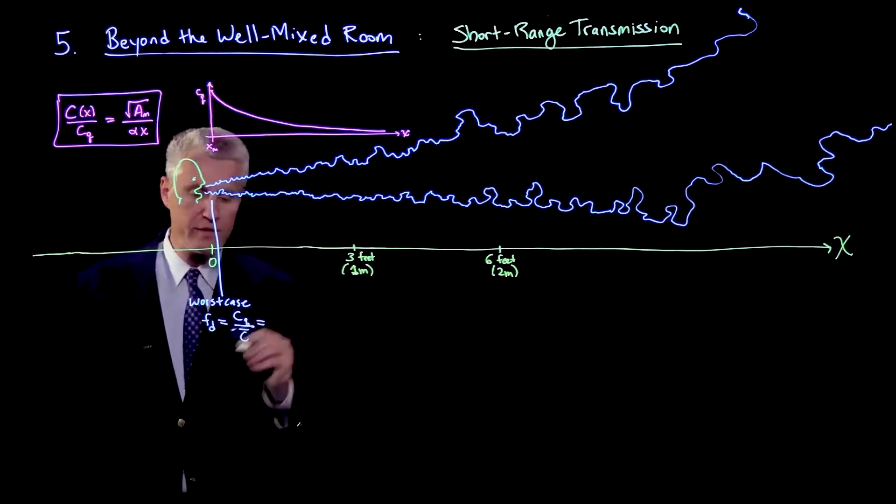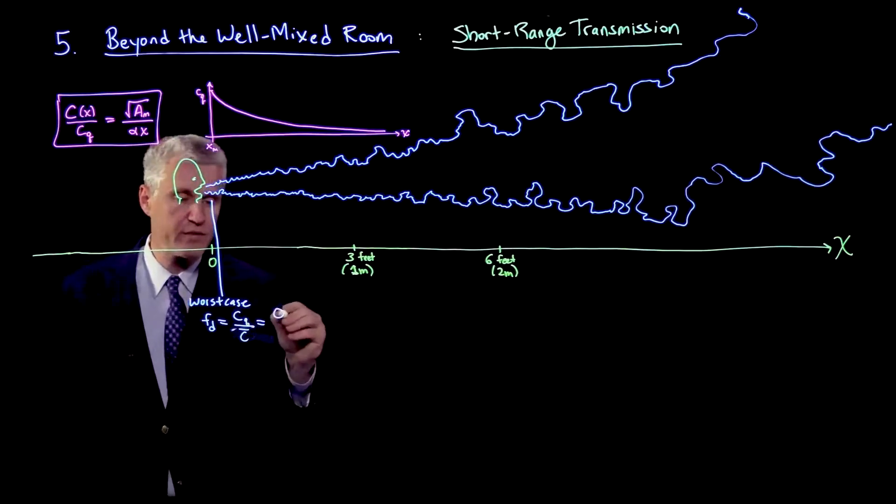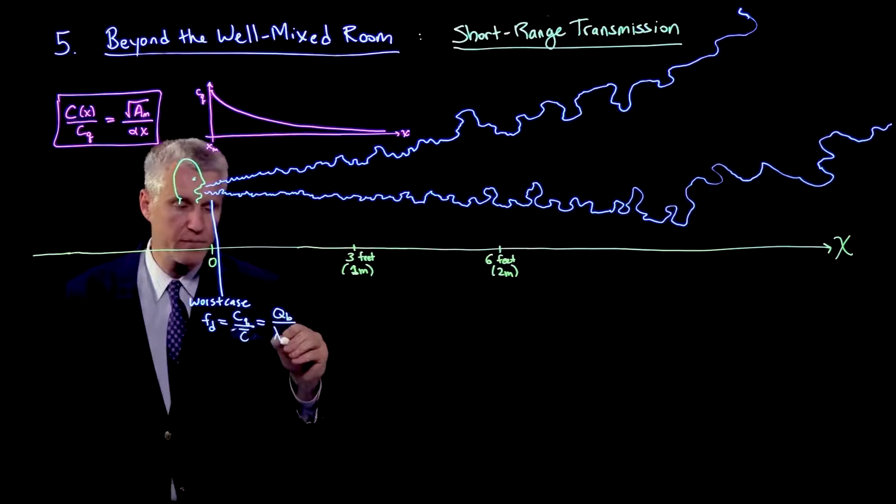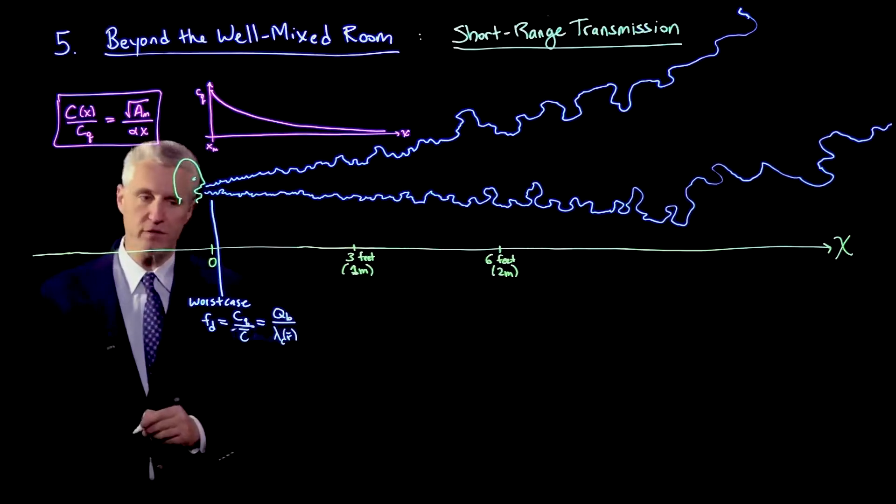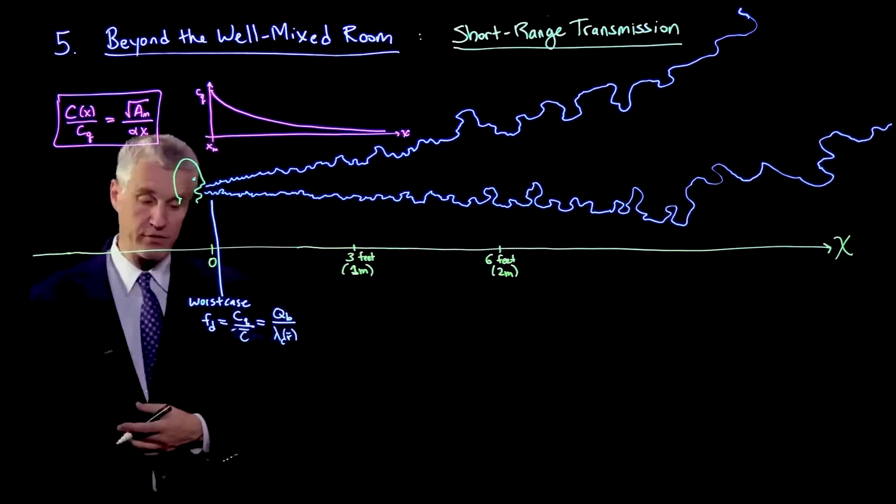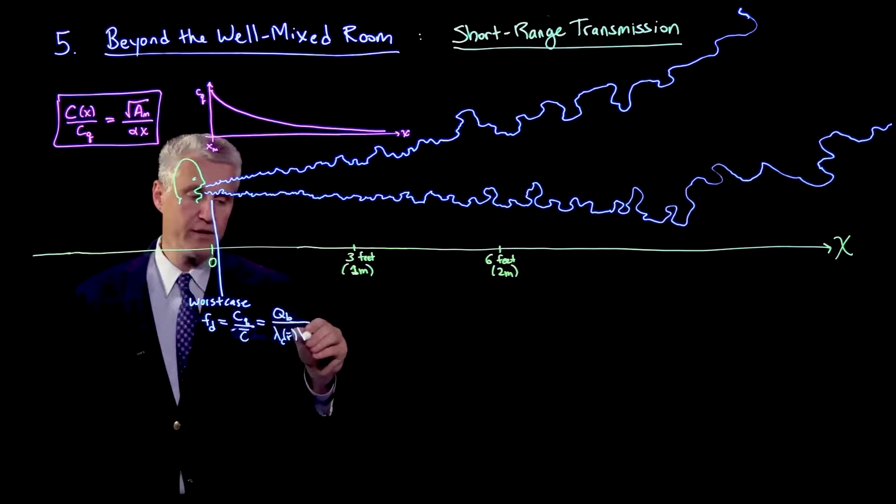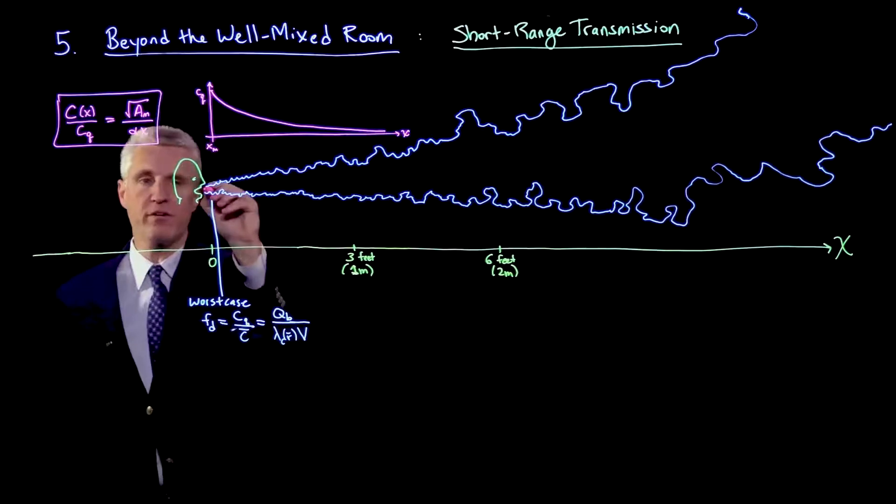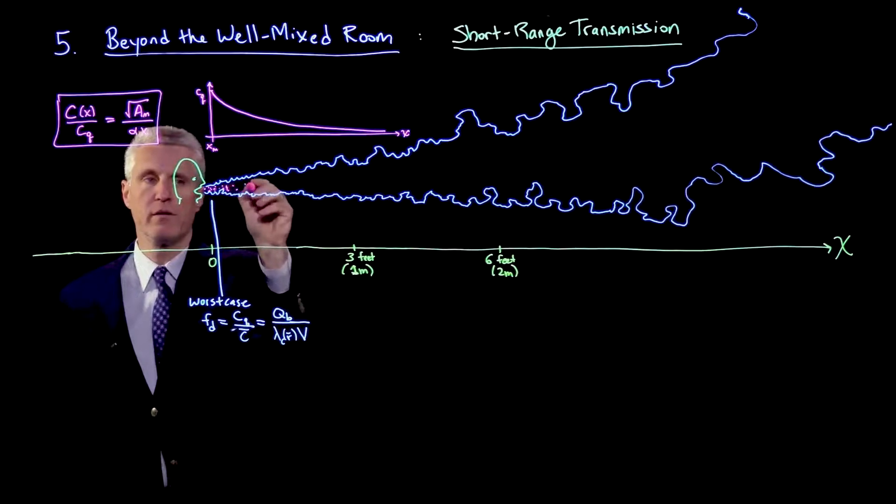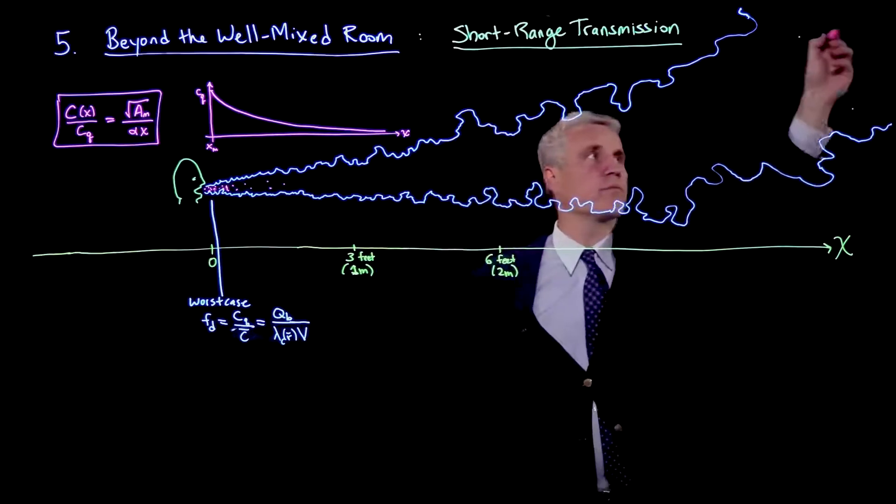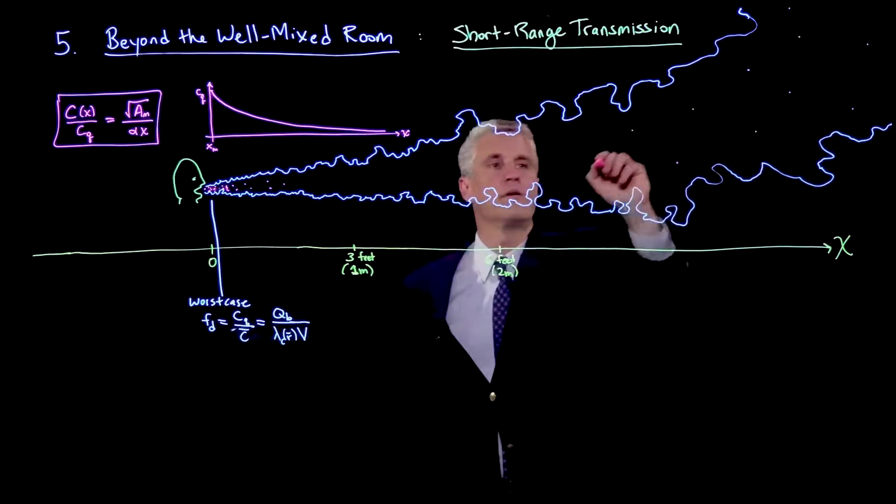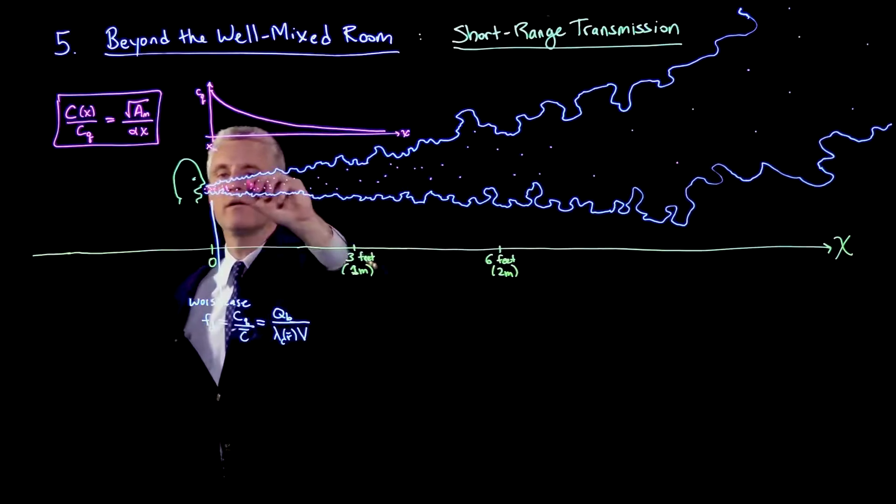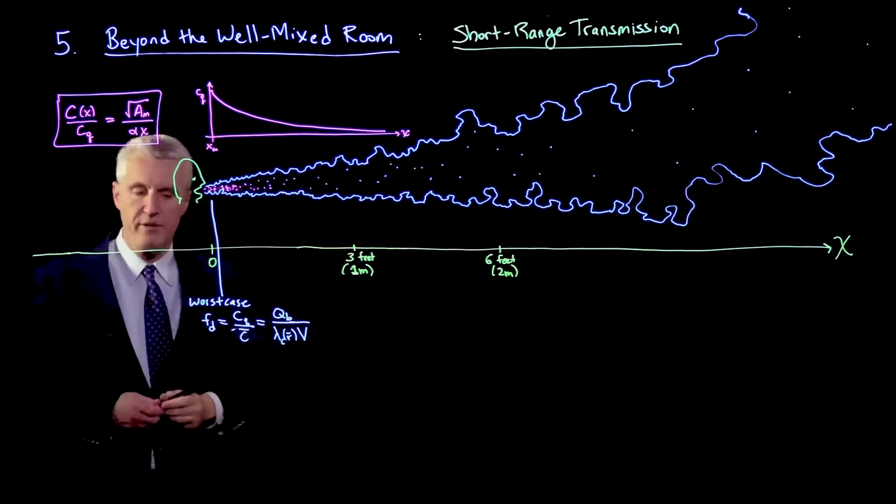The dilution factor can be written as the flow rate of the breath Qb divided by the decay rate of the concentration field lambda c at the appropriately defined mean radius, times the volume of the room V. This tells us how much more concentrated the infection quanta or viruses are at the source versus the well-mixed room where they're really spread out. Now how big is this factor?